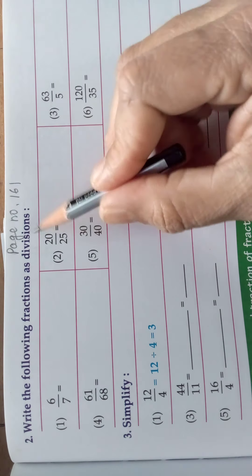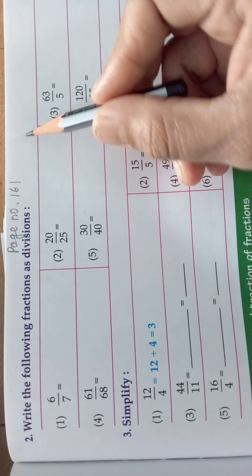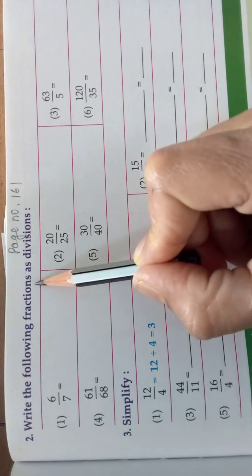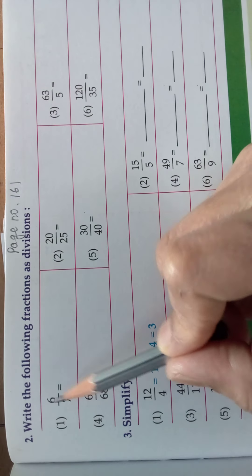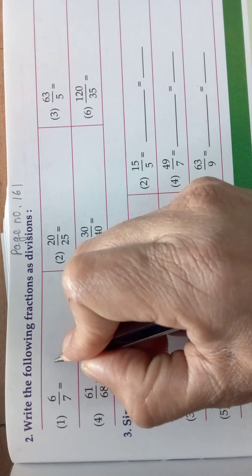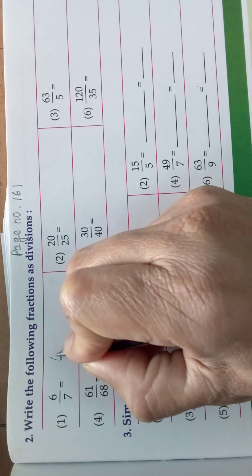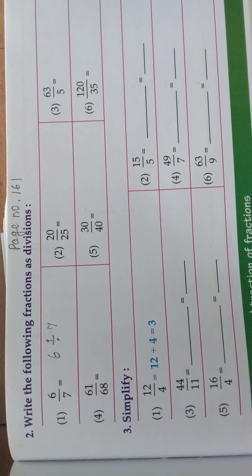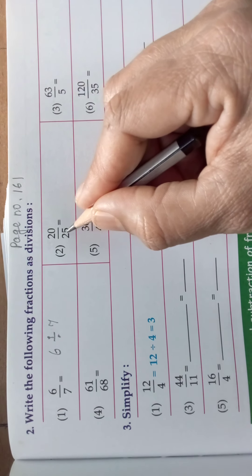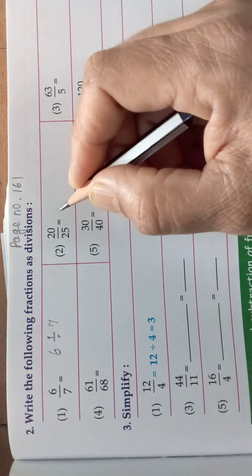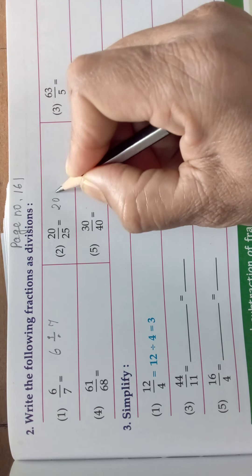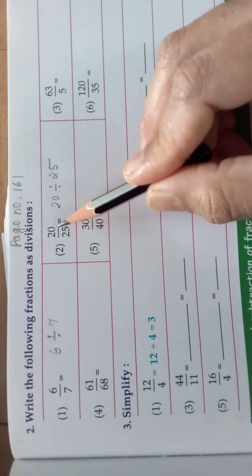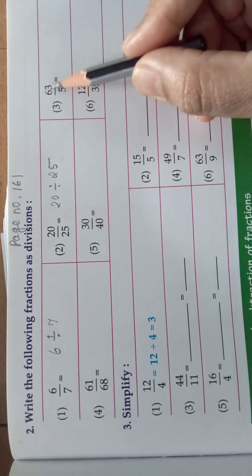Now take page number 161, the next page. In the second assignment: write the following fractions as divisions. Now we are going to write fractions as divisions. How to write? 6 by 7 — write it as 6 divided by 7. In this way we should write it. 20 by 25 — how to write this? 20 divided by 25. This is the division form of this fraction.